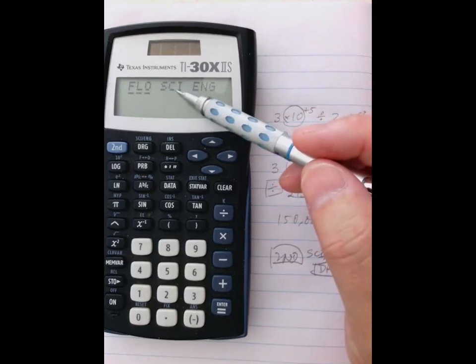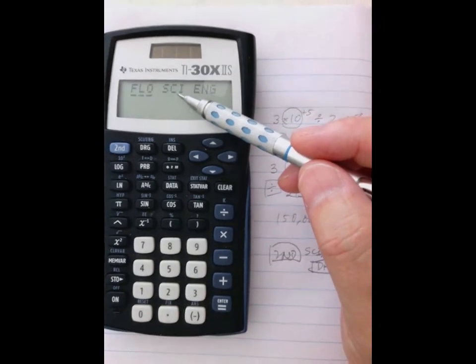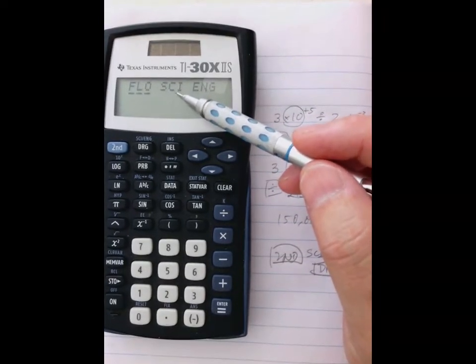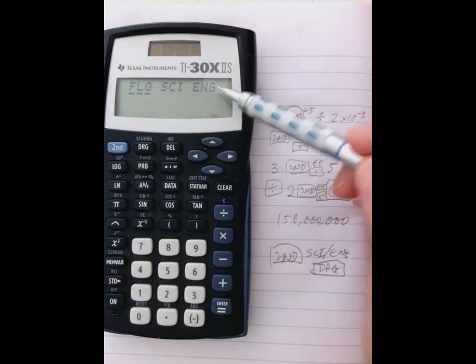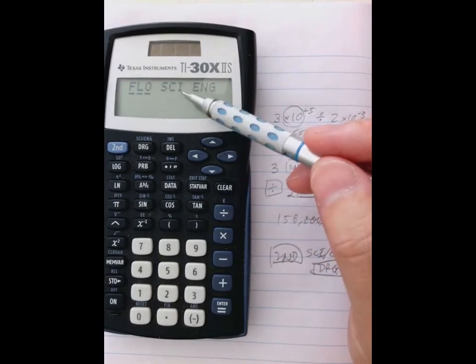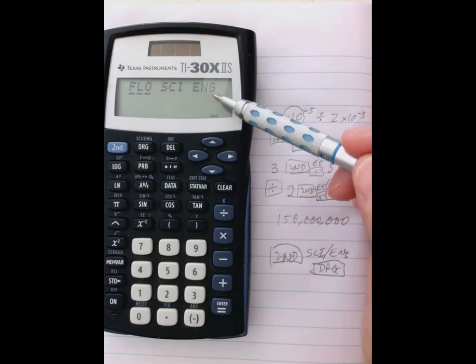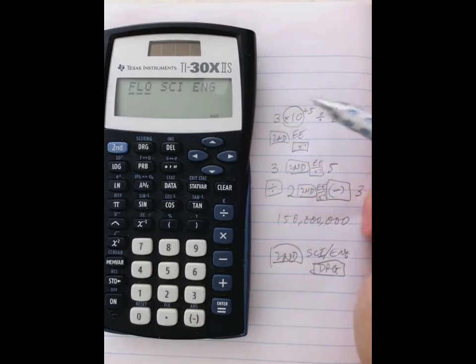Alternatively, you can have scientific or engineering. Scientific notation is what we're doing now. Engineering notation is like scientific notation except that the power of 10 here, they move the decimal around to force the power of 10 to be in multiples of 3.